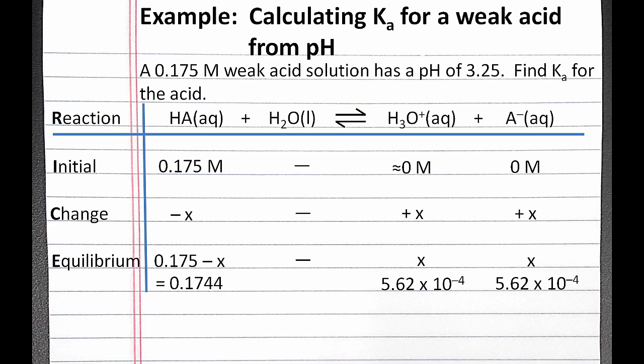And now we can write the equilibrium expression for k sub a and substitute in our values from the equilibrium concentration row. So that's 5.62 times 10 to the negative 4th squared divided by 0.1744. If we put this in our calculators, we should get 1.8 times 10 to the negative 6th, which is our Ka for the weak acid.